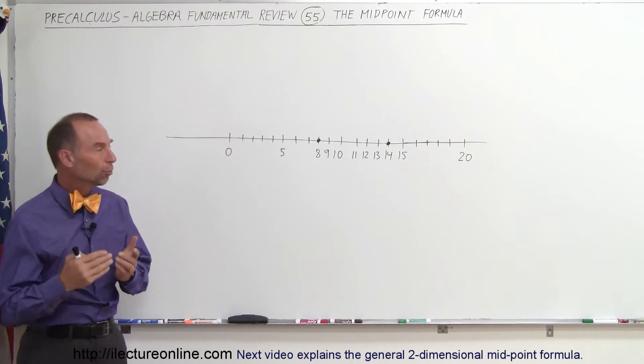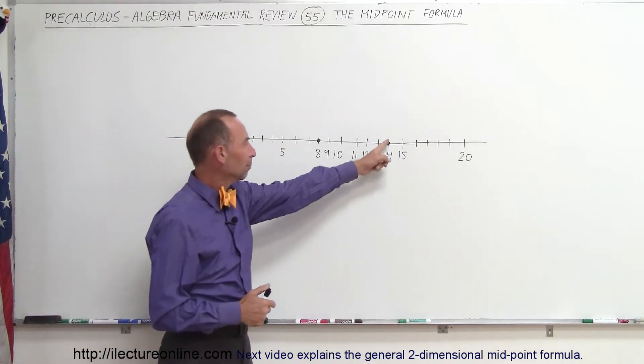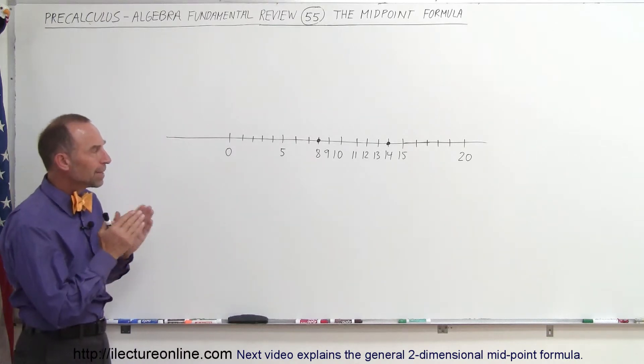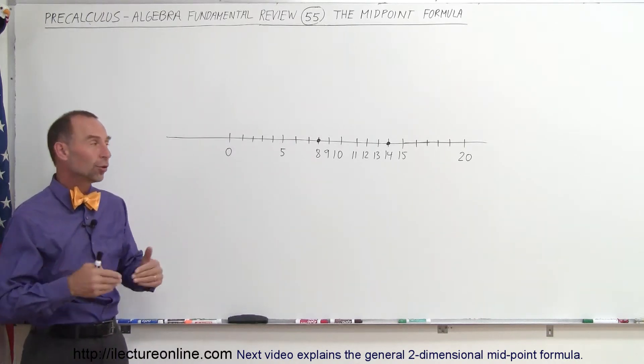If I had to take two points on the number line, let's say point 8 and point 14, and I wanted to find the middle, the midpoint between those two, how do we do that?